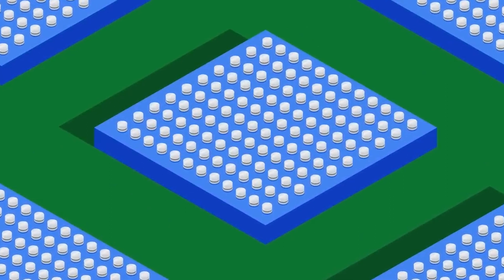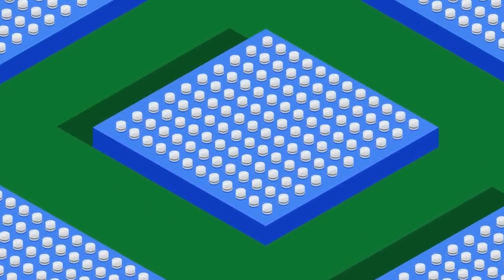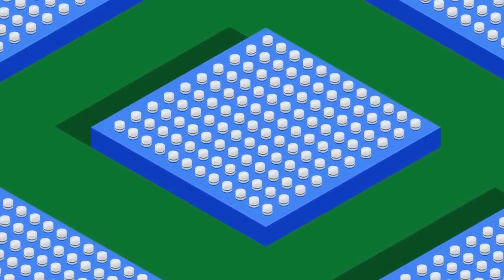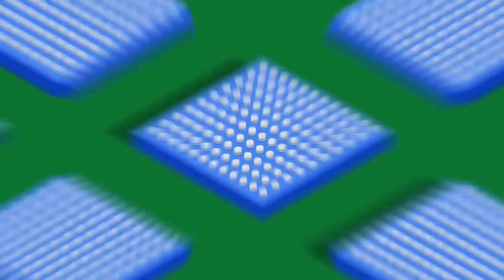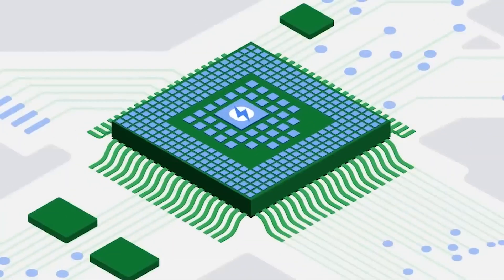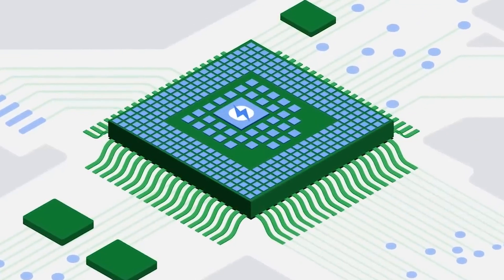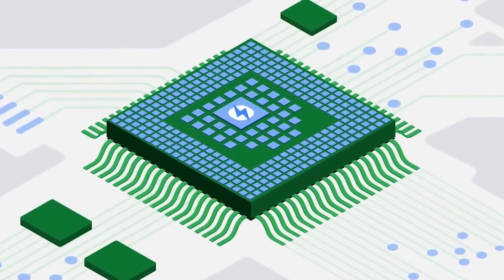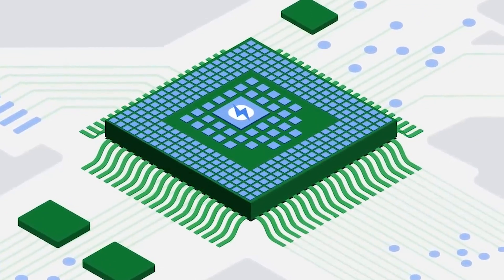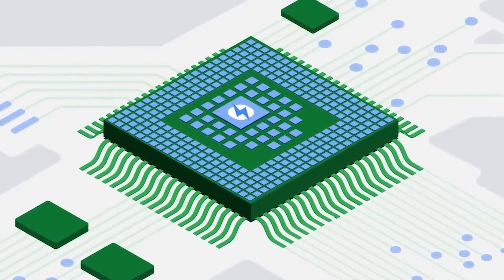When a transistor is on, electricity passes through it. When it's off, it blocks the electricity. This duality defines how computers operate. If you chain enough transistors together, each either on or off, you can create complex logic.